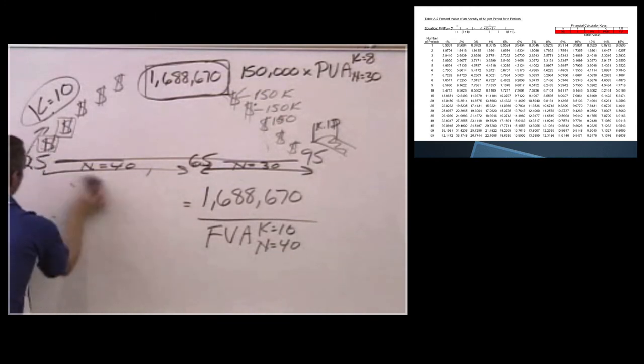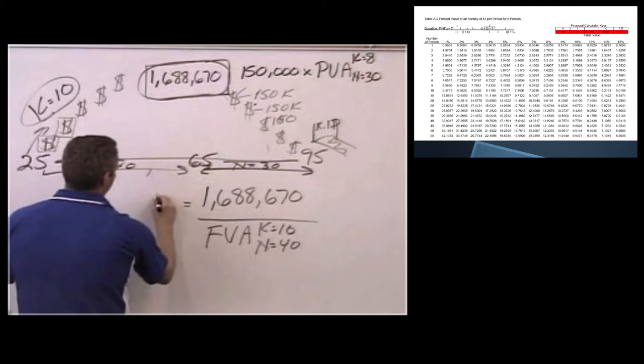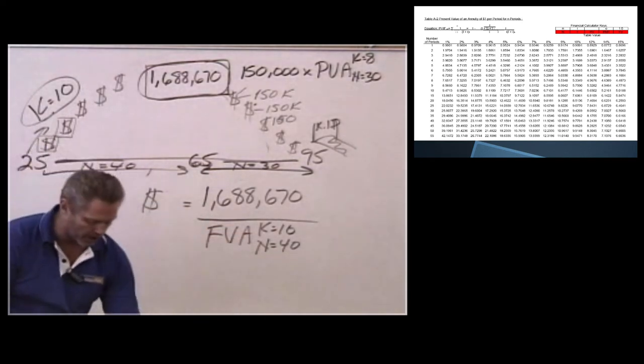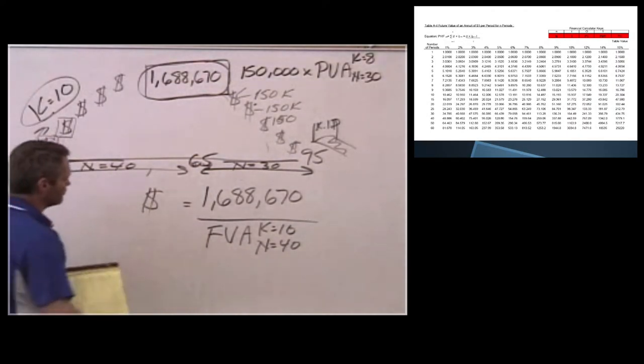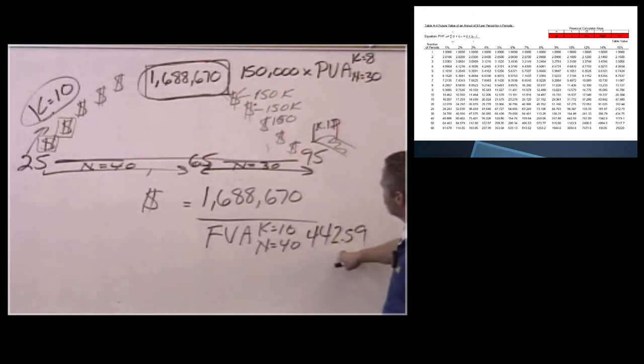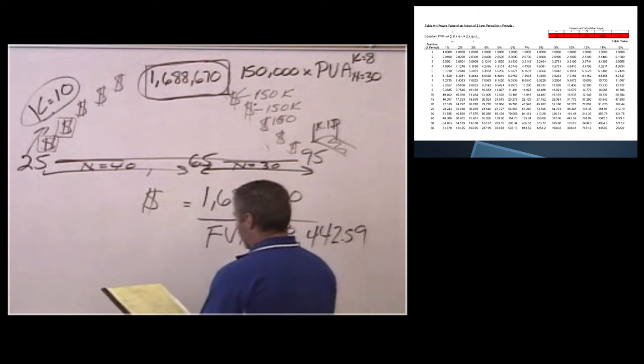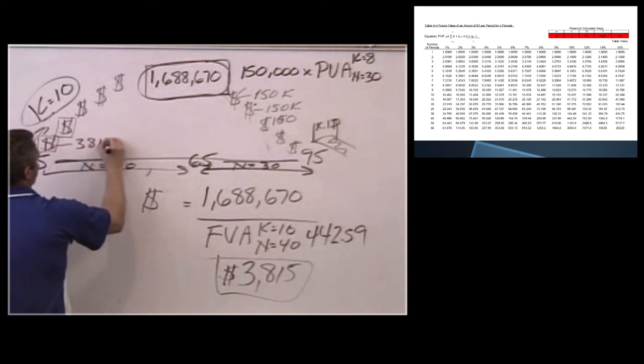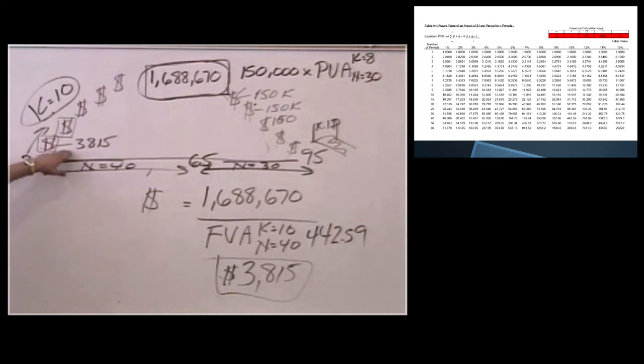So we erase here. And what we get is X, or the dollar amount that we need to save each year. We're going to take the money we need and divide it by the future value of an annuity, K equals 10, N equals 40. So we look up that factor on the chart. And that factor is 442.59. I divide 442.59 into $1,688,670. And what I end up with is $3,815.